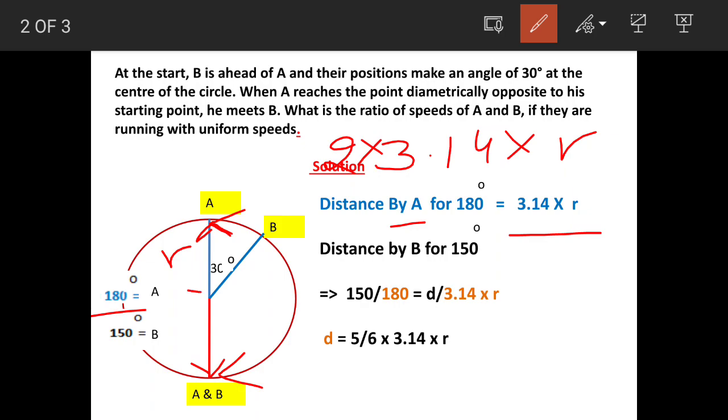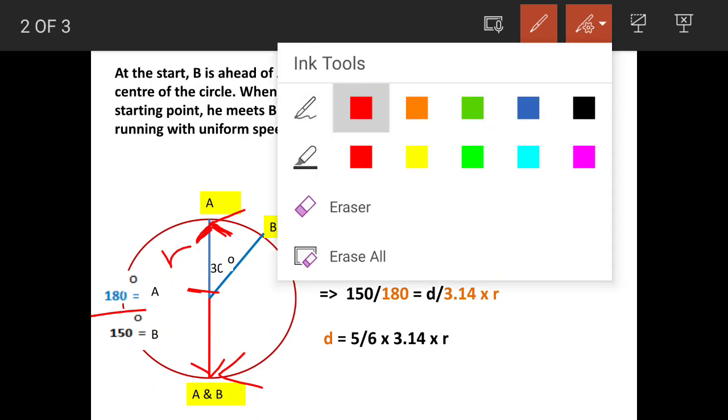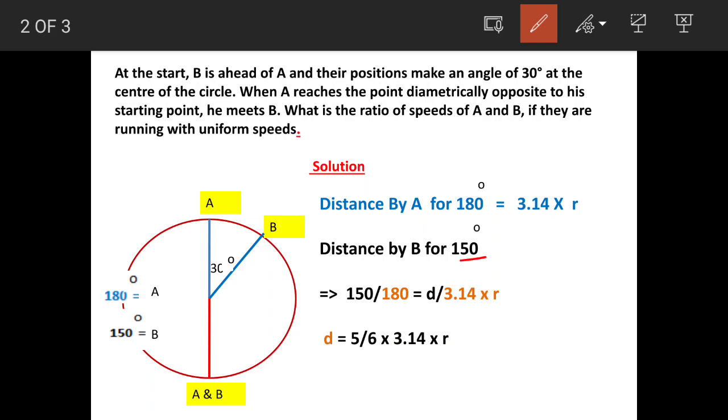Now distance for 150 degrees. For 150 degrees, we will take the ratio of angles of A and B and the distances. So for B it is 150, for A it is 180 degree angle.